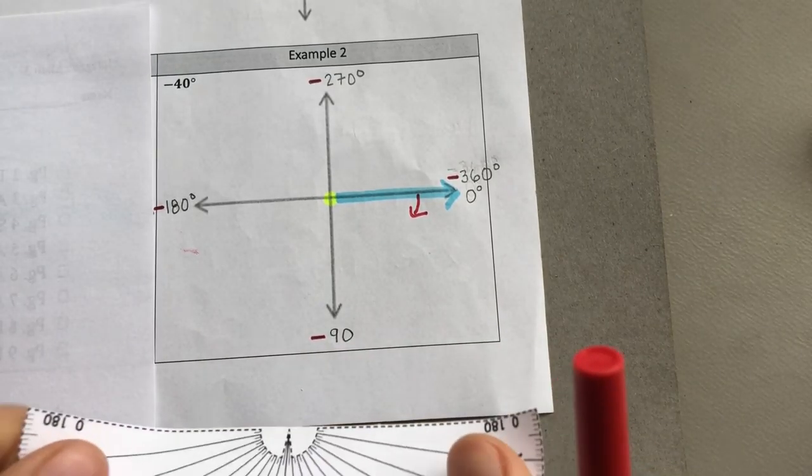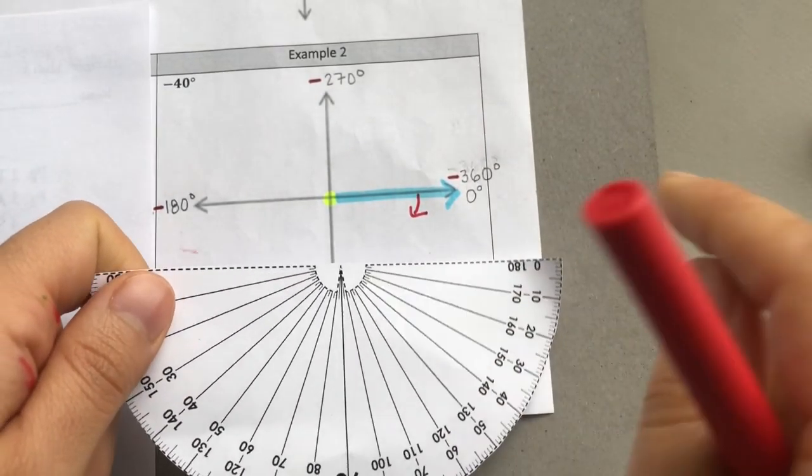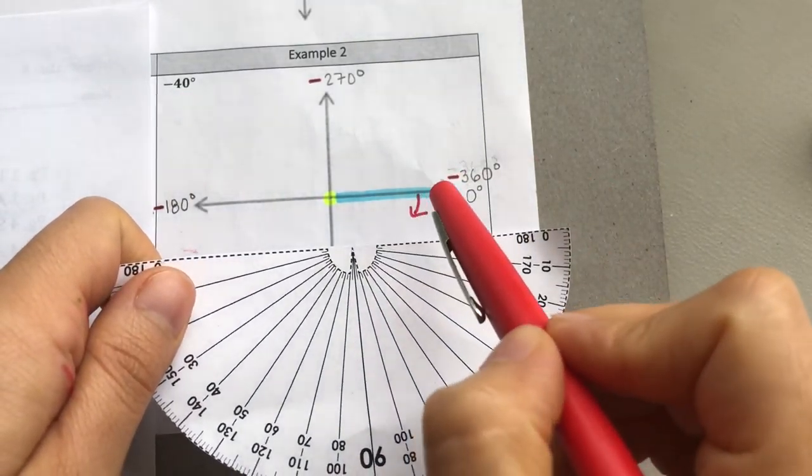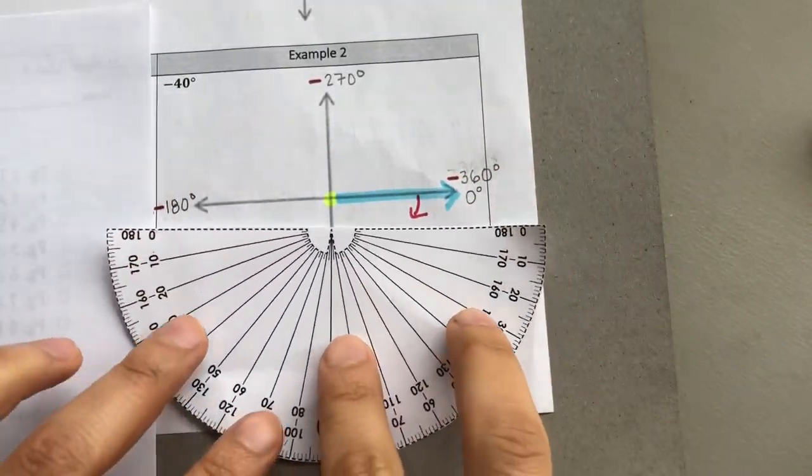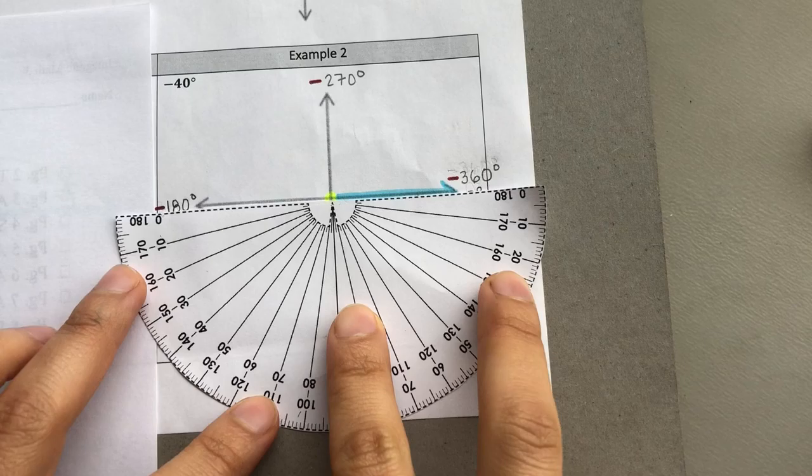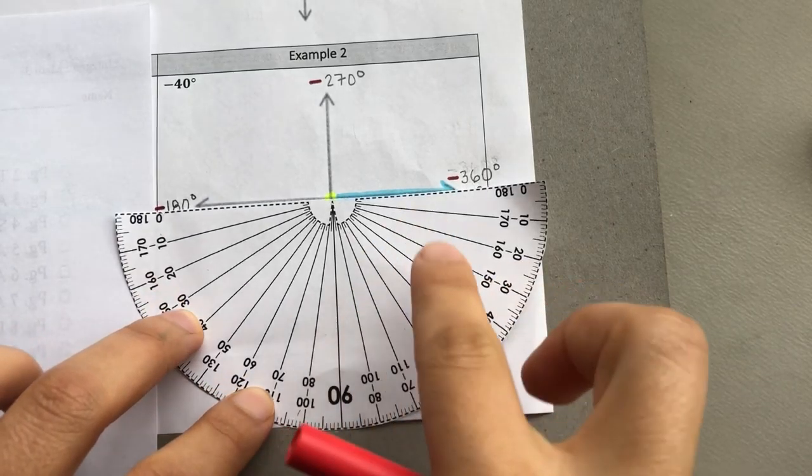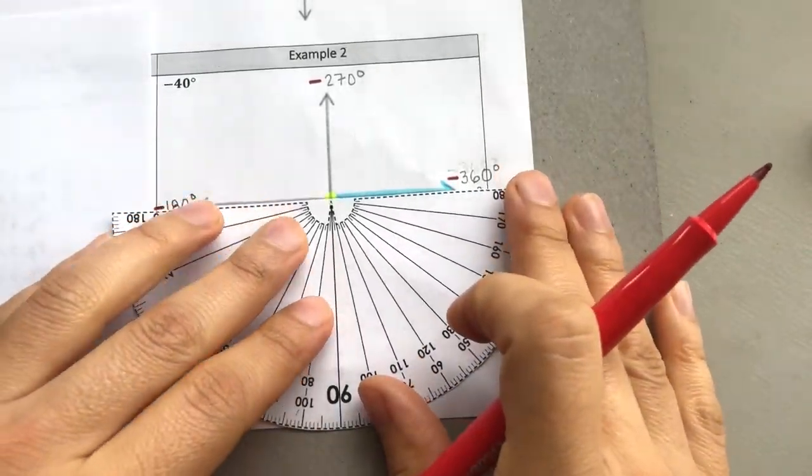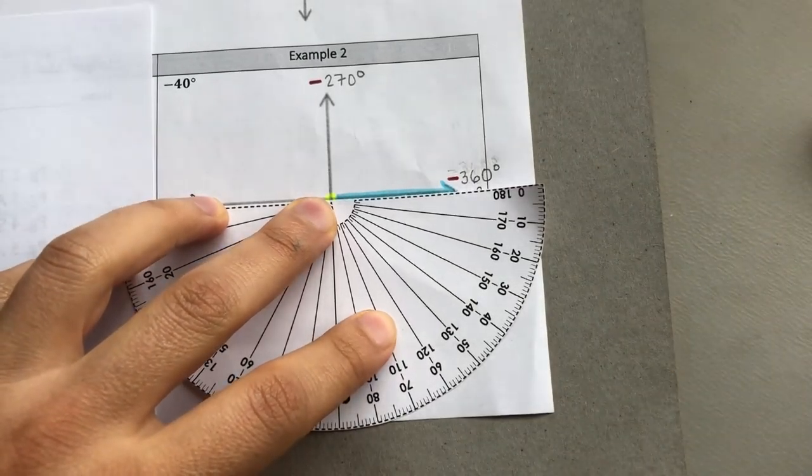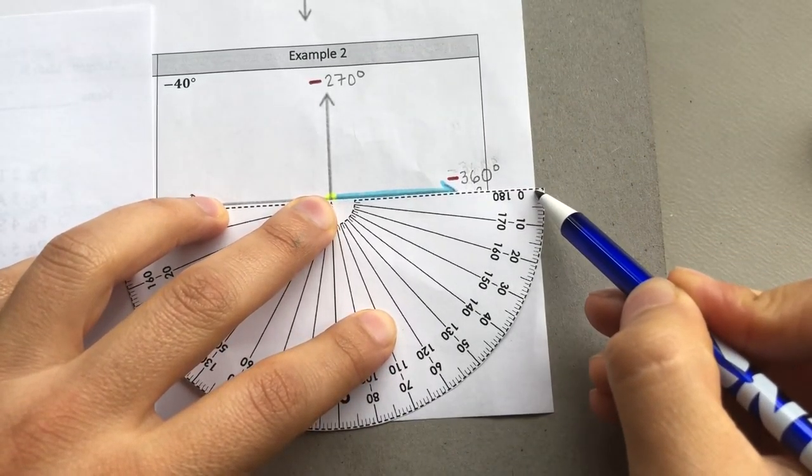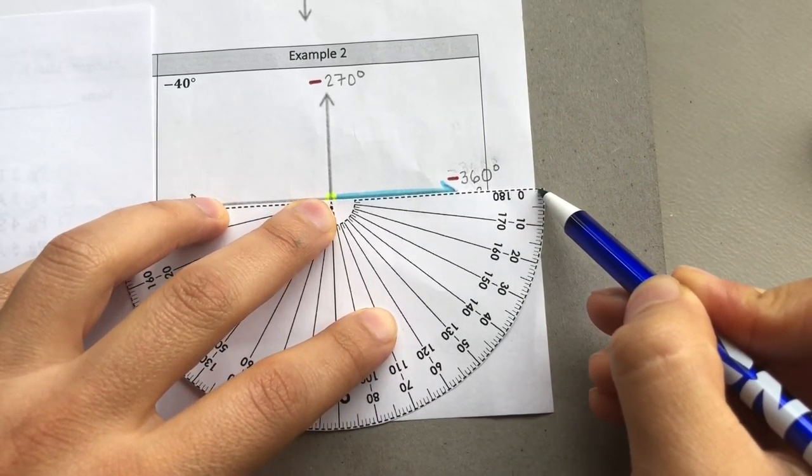So we grab our protractor. Remember, when we are drawing a negative angle, we place our protractor down here. We start at 0. We are looking at the numbers on the outside of the protractor.